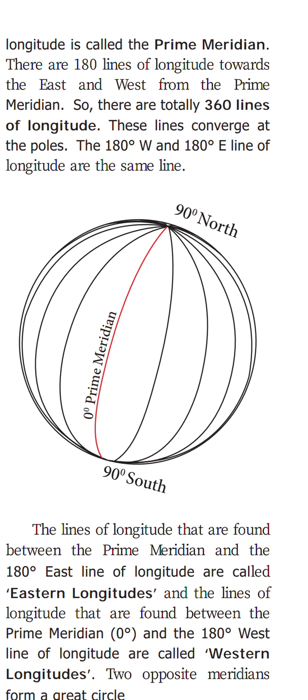The 180 degree west and 180 degree east lines of longitude are the same line. From zero degree, if you move towards the west and also towards the east, when you reach 180 degrees both meet — they join together and become the same line.